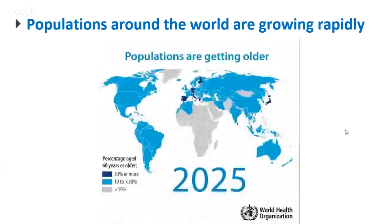Another reason to care about aging: the projected percentage of people aged 60 or older in the year 2025 shows that countries like Japan, Germany, Italy, and Spain will have more than 30% of their citizens over 60. Most countries in the world will have 10 to 30% of their population aged over 60 — including China, India, and Brazil, which have the largest populations in the world.